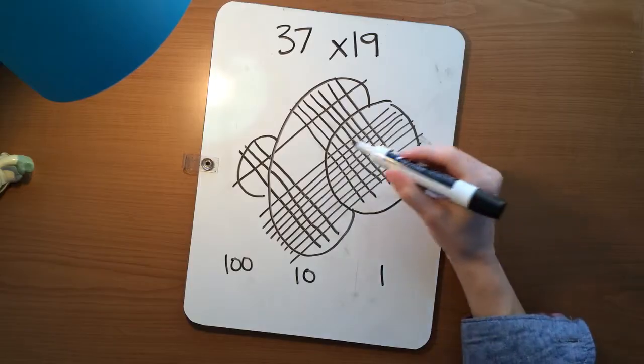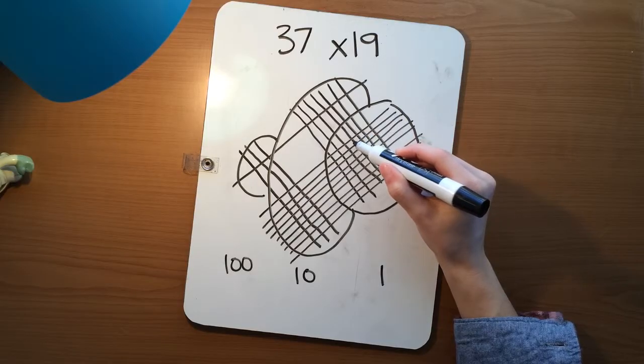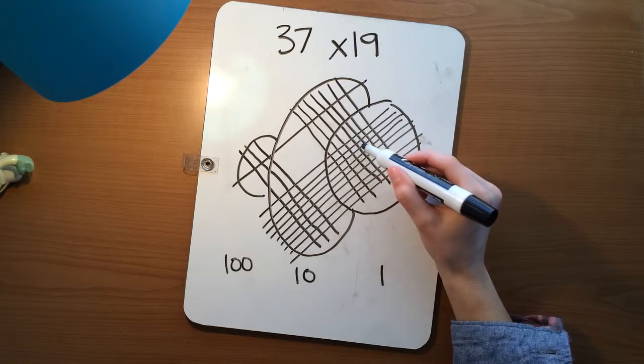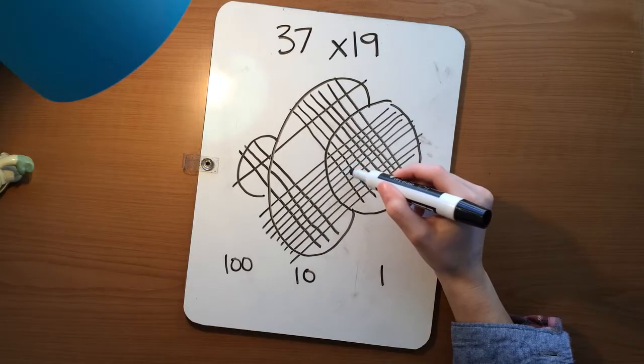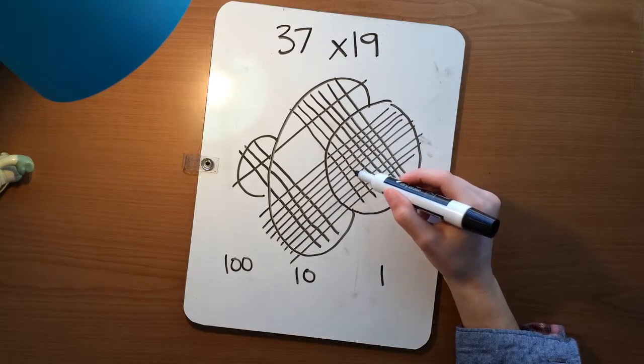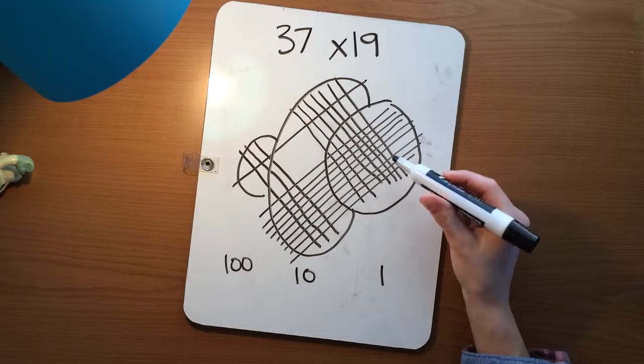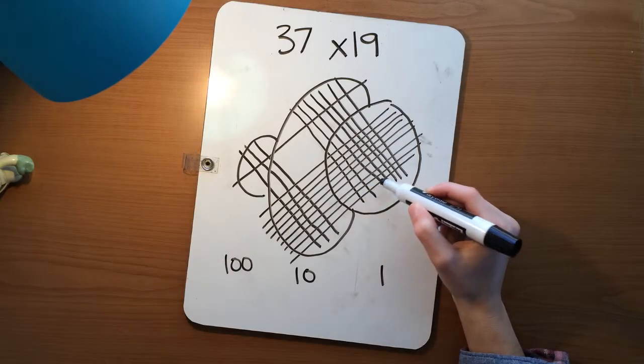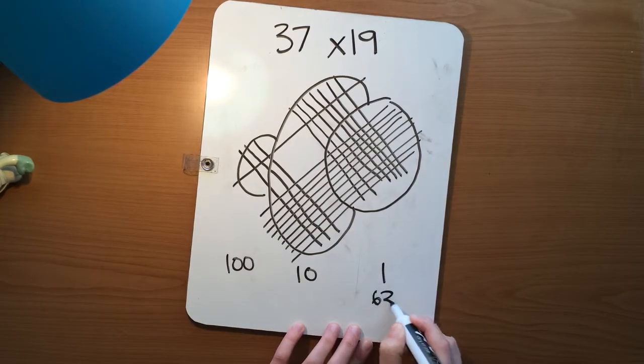Alright. Let's start counting. 1, 2, 3, 4, 5, 6, 7, 8, 9, 10, 11, 12, 13, 14, 15, 16, 17, 18, 19, 20, 21, 22, 23, 24, 25, 26, 27, 28, 29, 30, 31, 32, 33, 34, 35, 36, 37, 38, 39, 40, 41, 42, 43, 44, 45, 46, 47, 48, 49, 50, 51, 52, 53, 54, 55, 56, 57, 58, 59, 60, 61, 62, 63. I count 63 intersections there.